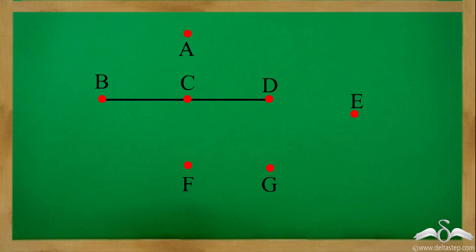So, among all these given points, B, C and D lie on a straight line, hence they are collinear.